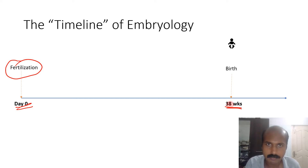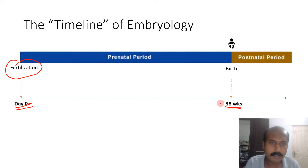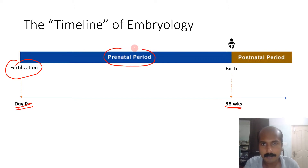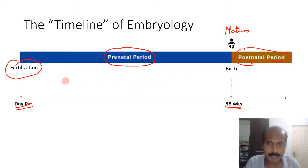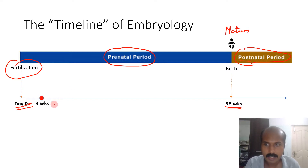Before those 38 weeks you have what is called the prenatal period, and after birth it is called the postnatal period. The word 'natum' means birth, so prenatal is before birth and postnatal is after birth. This prenatal period — the intrauterine life — can be split further into smaller segments, and that is important in our nomenclature in embryology.